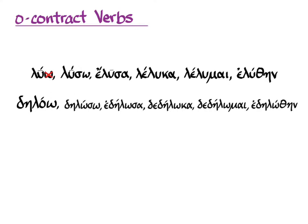If you take off the omega from the first principal part, you're left with a stem that ends in an omicron. With luo as your stem, all you do is add the endings you've learned for everything from the first principal part — no problem. But with delao and other omicron contract verbs, as the name implies, you have to contract that omicron with the endings. This video will show you how to do that and the endings that result.